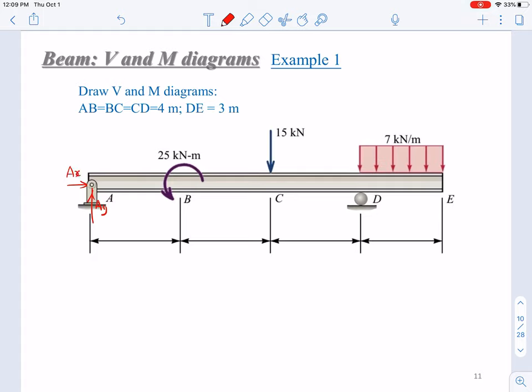And point B, nothing. Point C, nothing. And point D, we have a Dy. So we just need to determine this Ax, Ay, and Dy. So how to determine this? Free body diagram has been here. So we just list some equilibrium equations to determine these three values.